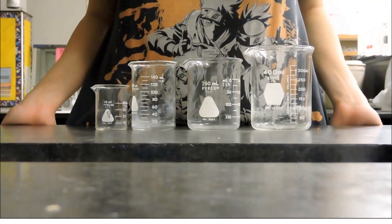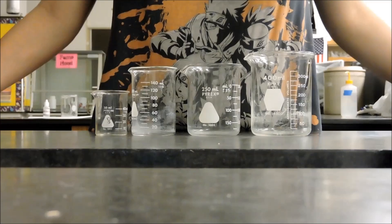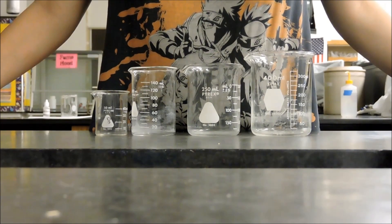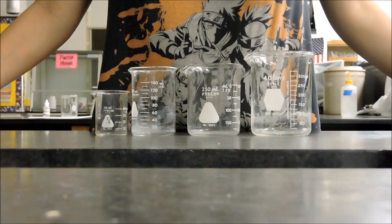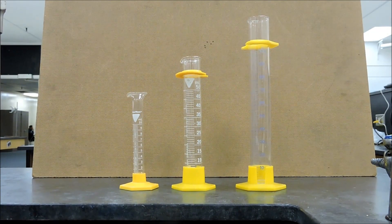There you go, these are beakers. They are used in multiple labs. You will use them to measure the volume of a liquid. They are the least accurate sources of measurements. Graduated cylinders are also used to measure the volume of a liquid. These are more accurate than a beaker and a flask.